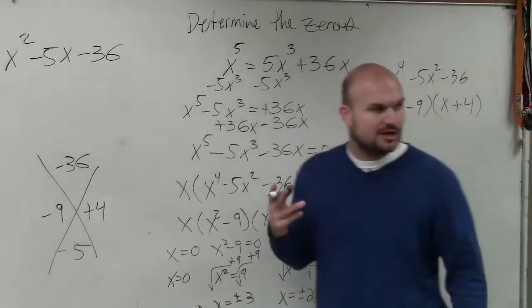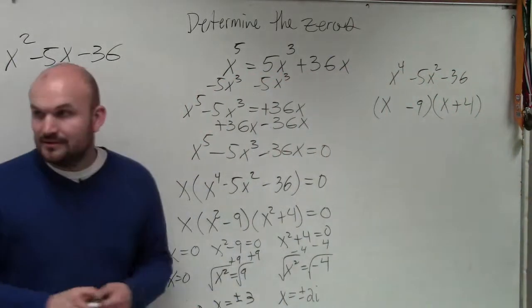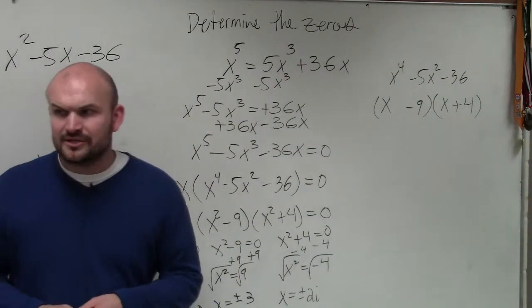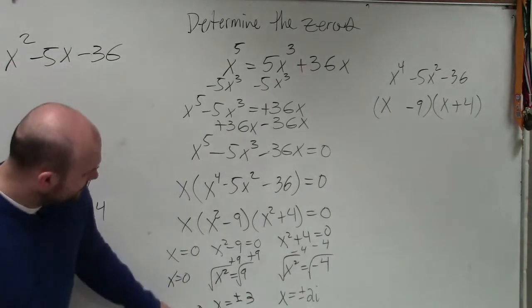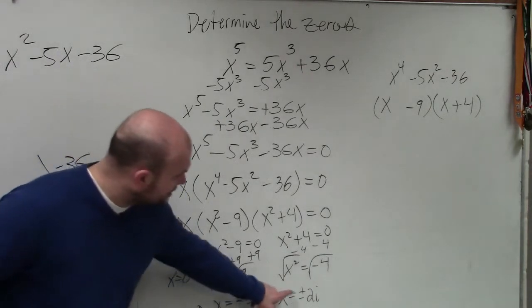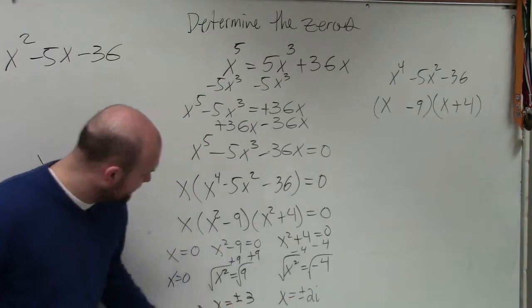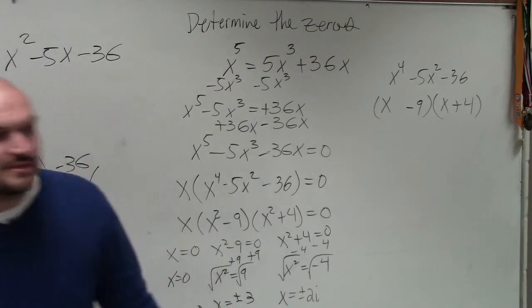So now, what I want you guys to understand - so therefore, we have, now if you guys count your zeros, you have 1, 2, 3, 4, 5 zeros.